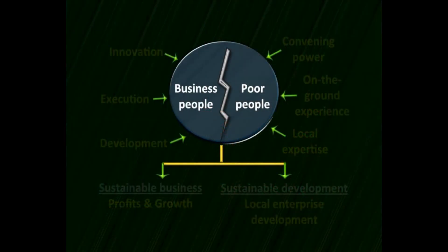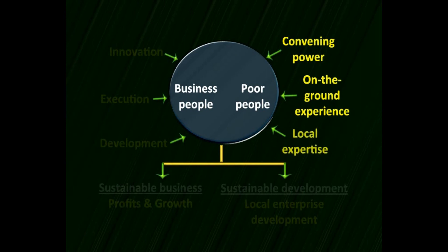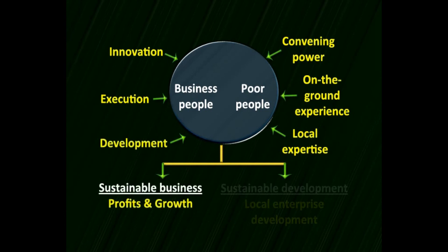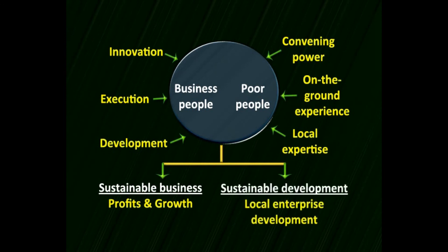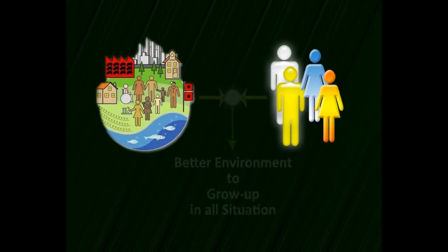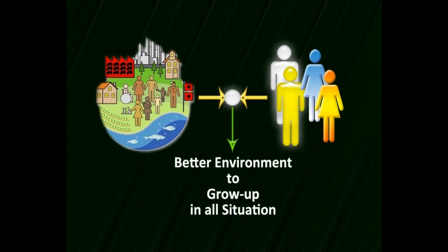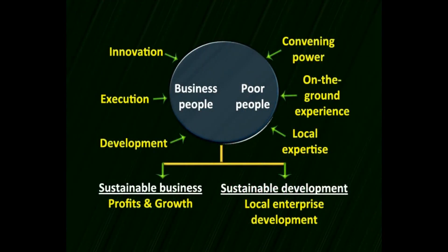It is important that poor and backward people are connected to the main business community so they can take up jobs. Building networks that combine people together — giving them experience, local expertise related to innovation, execution, and resource development — is important. We have sustainable businesses in terms of profits and growth, and sustainable development through local enterprise development. Systems need to be combined and networks formed through associations and forums where people can connect, exchange information, and exchange opportunities to catalyze development.